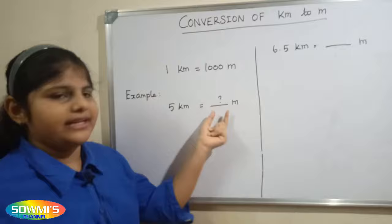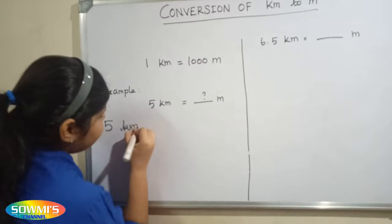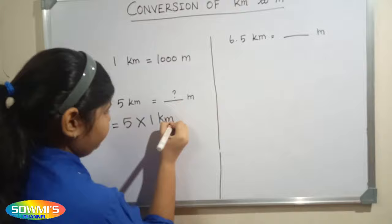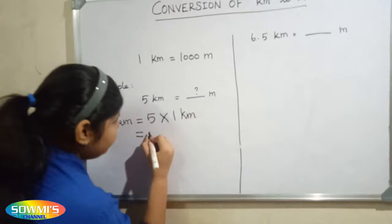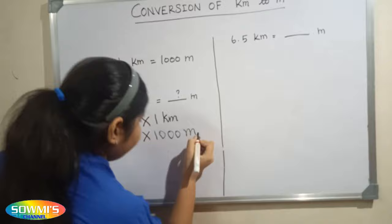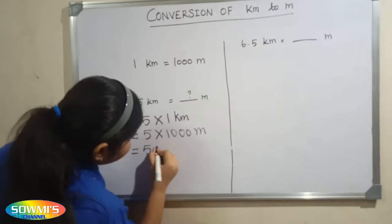5 kilometers into meters. 5 kilometers is equal to 5 multiplied by 1 kilometer. Here, 1 kilometer is equal to 1000 meters. So 5 multiplied by 1000 meters equals 5000 meters.